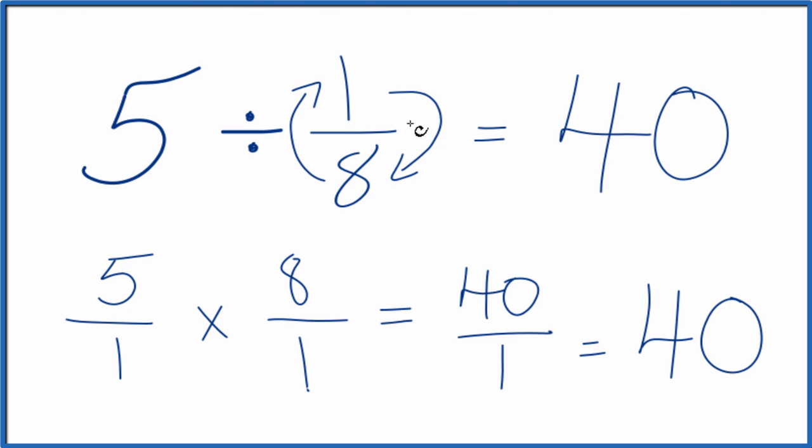If you multiplied 40 by 1 eighth, you get 5. So we did this correctly.